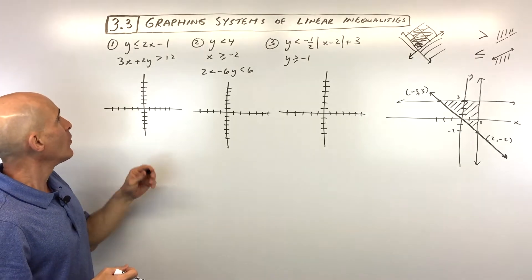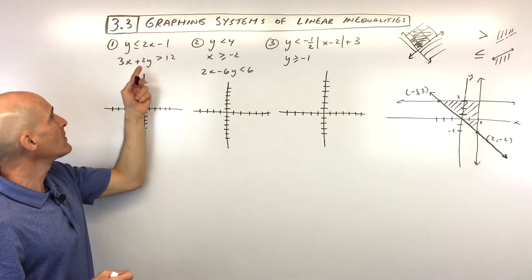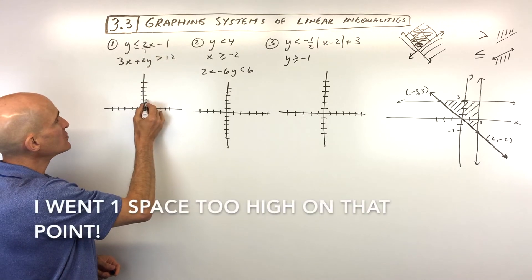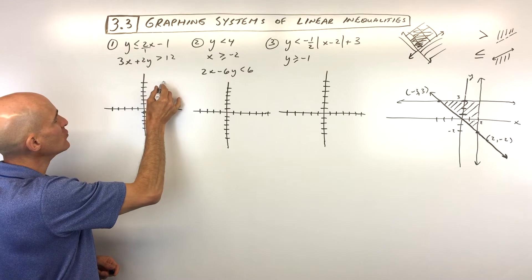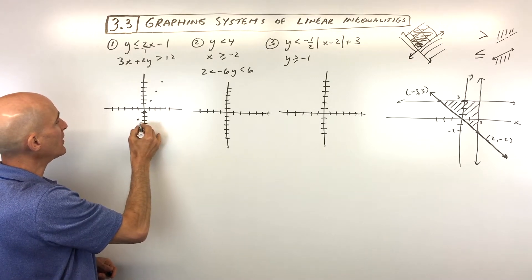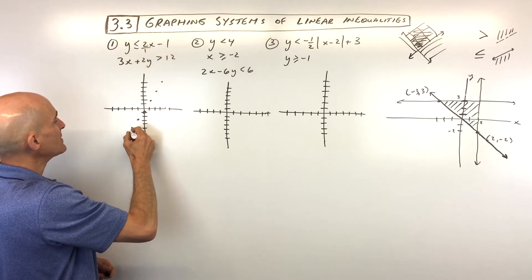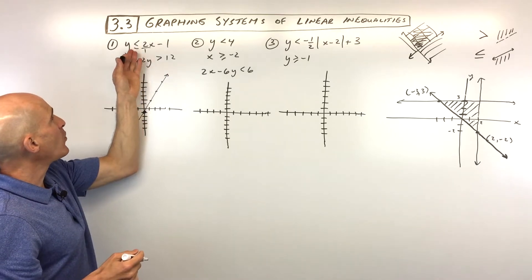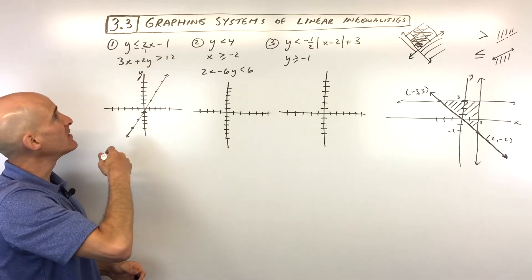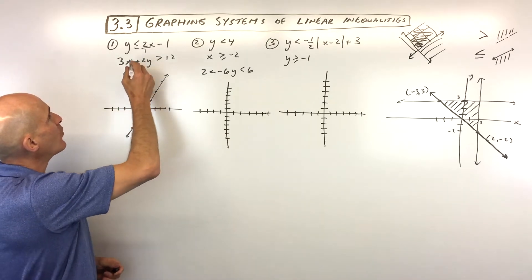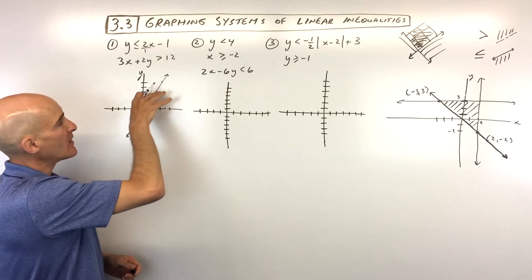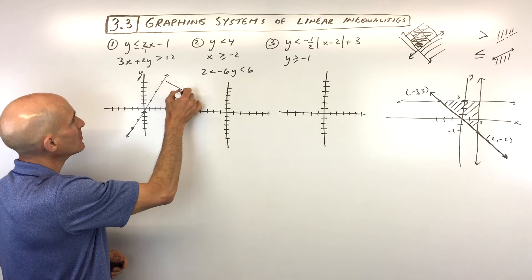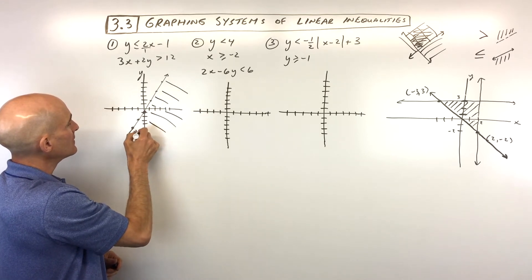The first inequality is already in slope-intercept form. The y-intercept is negative 1, so it crosses right there at negative 1. The slope is 2, which is 2 over 1, so we go up 2 over 1 repeatedly — or down 2, left 1. It's less than or equal to, meaning it includes the points on the line, so it's a solid line. Because y is by itself and less than or equal to, we're shading below. I like to draw lines perpendicular to that line so I can see the shading a little bit easier.